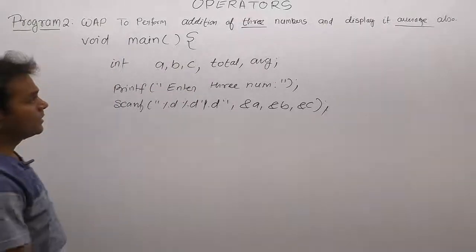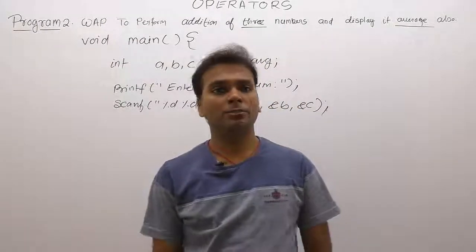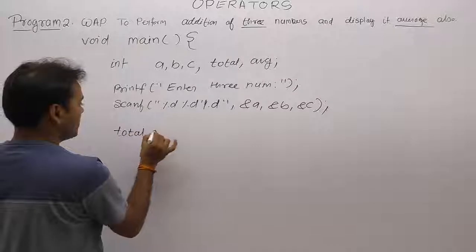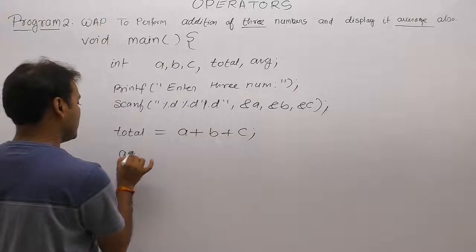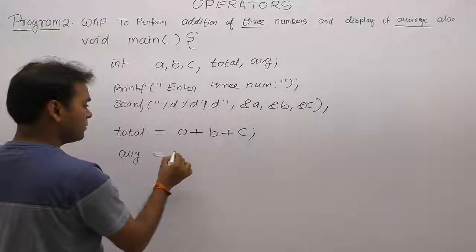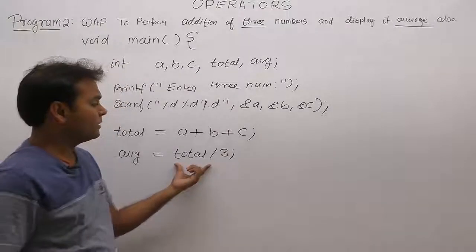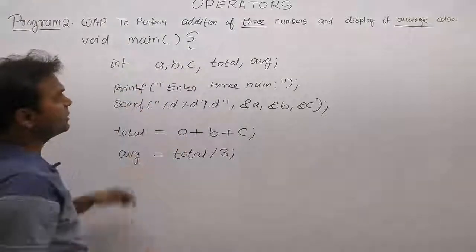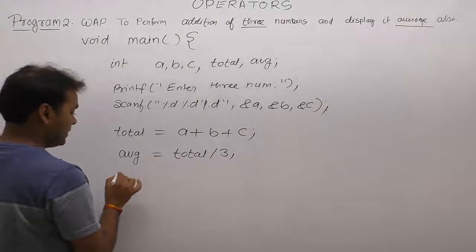Next, calculate the processing — generating the total and average. Total of them divided by the number of inputs: there are three variables, therefore total divided by three. Total may generate a float value, therefore the data type must be float, but in this case we are taking it as integer. You can take it as float or double based on requirement.